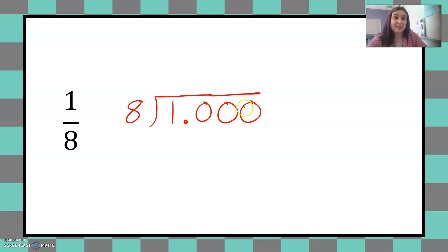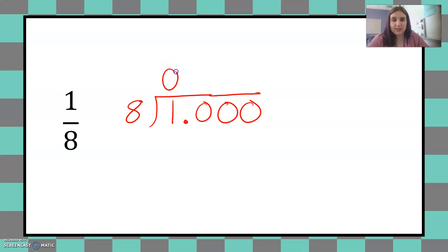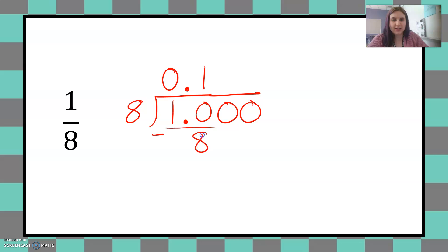What we can do is add zeros as placeholders. 1.000 is the same as just one, and we can use these placeholders to help with long division. Eight does not go into one, so I'll put a zero there and bring up the decimal point — the decimal point goes right up from where it is. So now I have eight going into 10. Eight goes into 10 one time. One times eight is eight, so I subtract eight.